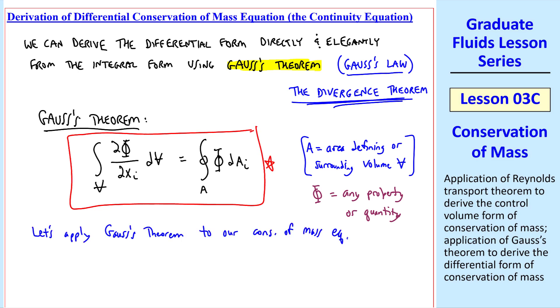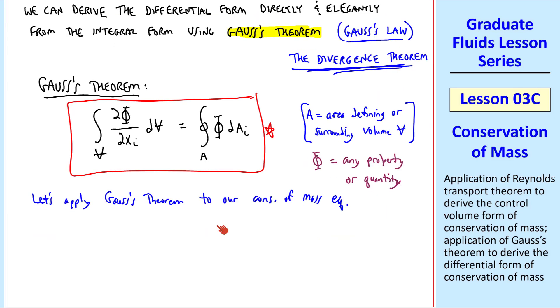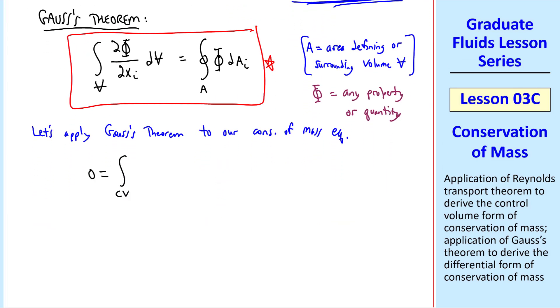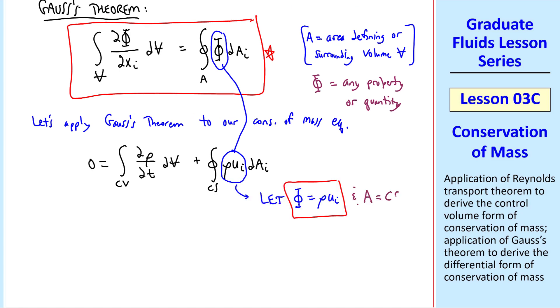Let's apply Gauss's theorem to our conservation of mass equation. First, let's rewrite the equation, namely the control volume portion of the equation we just derived from Reynolds transport theorem. And noticing that this form is similar to this form, if we let phi equal rho ui, and let a equal our control surface, and v equal our control volume. Since both this equation and this equation will apply at any instant in time, thus this integral can be written using Gauss's theorem as a volume integral over the control volume of del del xi of phi, which is rho ui, dv.